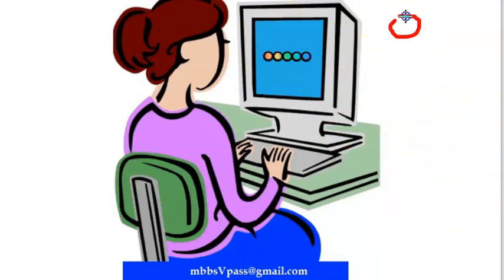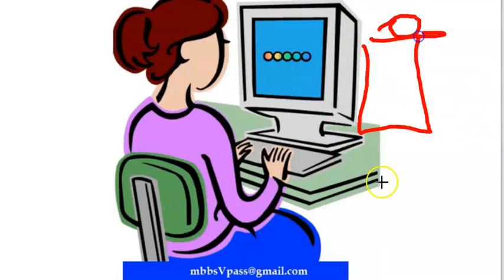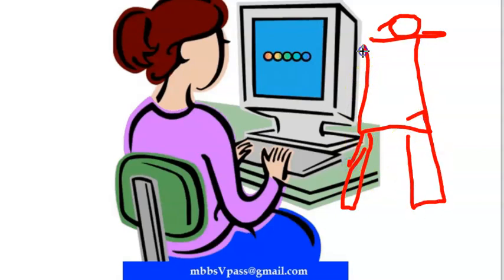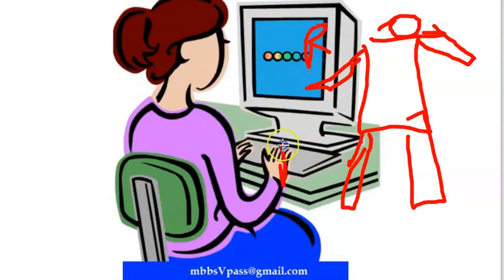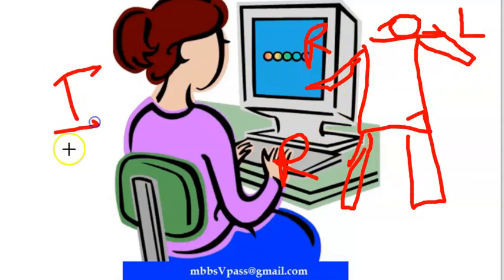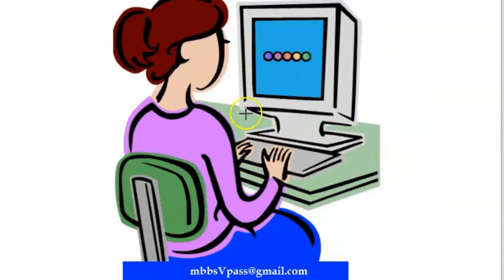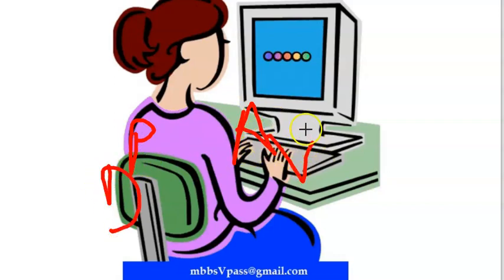Ipsilateral means on the same side — for example, the right hand and right leg are ipsilateral. Contralateral means on the other side — right hand and left hand are contralateral. Anterior is the front and posterior is the back.